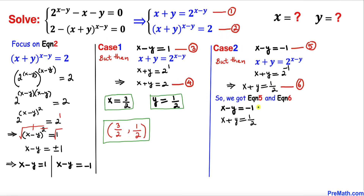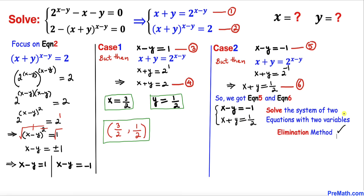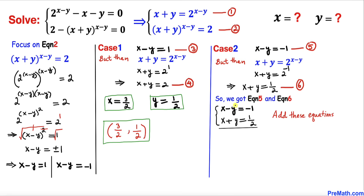Here I have copied down equations five and six. We are going to solve this system using the elimination method. Adding the two equations, the +y and −y cancel each other out. We get 2x = −1 + 1/2 = −1/2. Multiplying both sides by 1/2, we find x = −1/4.